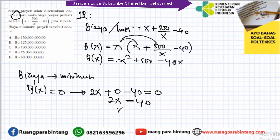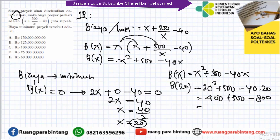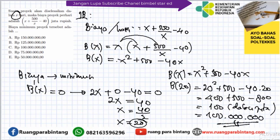Berarti 2x = 40, sehingga x = 20 hari. Sekarang kita hitung biaya minimumnya: B(20) = 20² + 500 - 40×20 = 400 + 500 - 800 = 100. Dalam juta rupiah berarti jadinya 100 juta. Jadi jawabannya adalah opsi C.